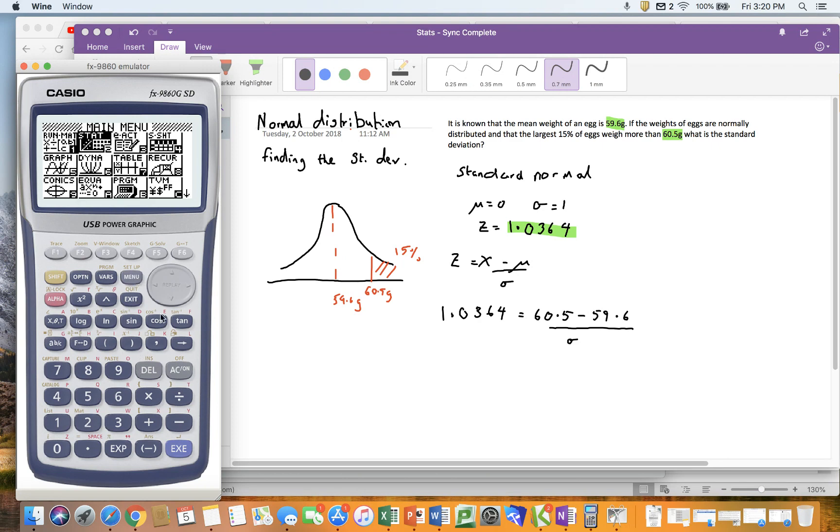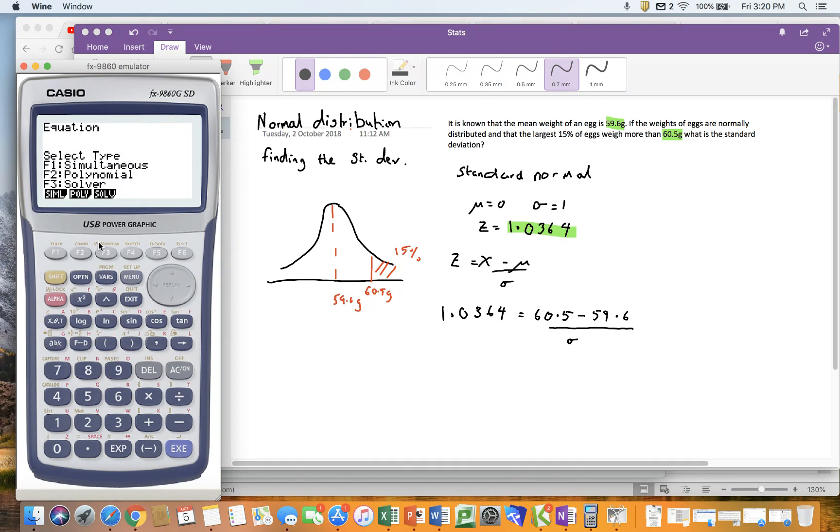Again though, I know some of you aren't so strong at the algebra side of doing stats, so therefore we're going to go to the equation editor, we're going to go to solver. I'm going to delete that because I'm starting afresh and I'm going to type in that my equation is 1.0364, oops not 10 point, that will give me quite a different answer.